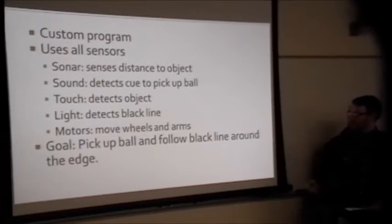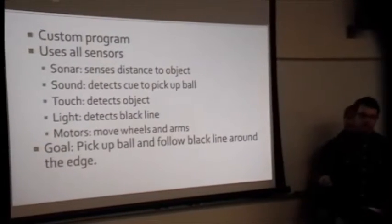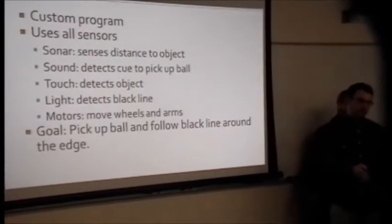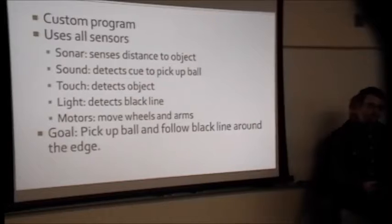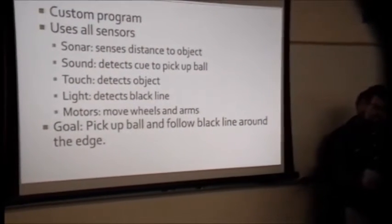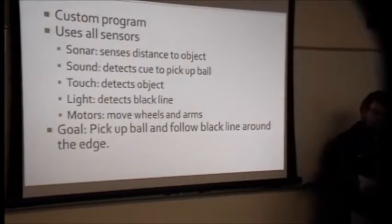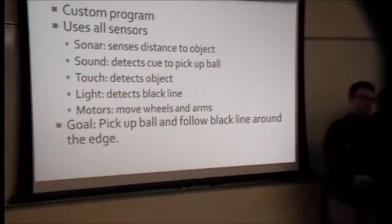Our goal was to pick up the ball and follow the black line all the way around. So what it does is it drives up to the ball, waits for its cue. We tell it to pick up the ball with a clap, and then it turns around, goes all the way back to the black line, and then follows the black line all the way around the perimeter for a kind of victory lap.